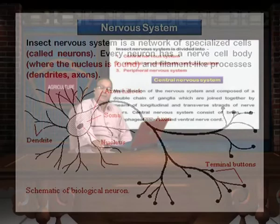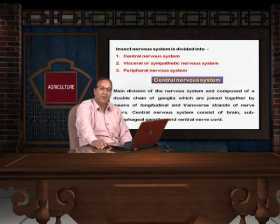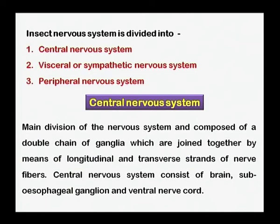In insects, the nervous system is classified into three parts: the central nervous system, the visceral or sympathetic nervous system, and the peripheral nervous system. The central nervous system is the main nervous system and is composed of a double chain of ganglia joined by longitudinal and transverse bands or fibers. It is divided into the brain (supraesophageal ganglia), the subesophageal ganglia, and the ventral nerve cord.